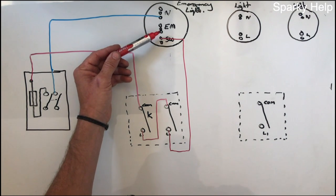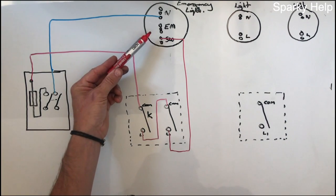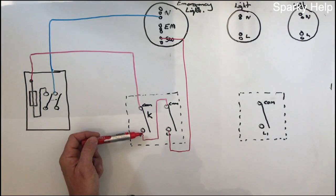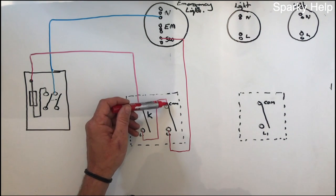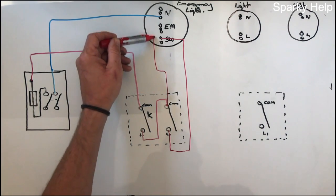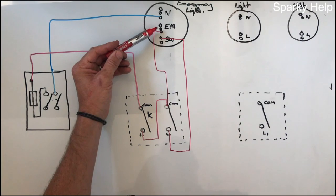But we need a permanent feed to the emergency light to feed the battery pack. But that's got to come from the key switch, so it can either come off of that point there, or that point there. It makes no odds, I'll come off of this one here. So it comes out and connects in there, and that becomes our permanent feed.